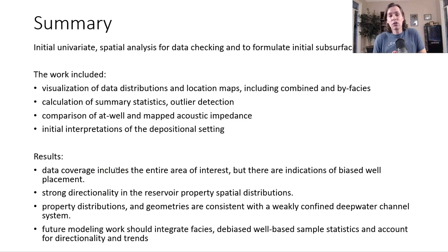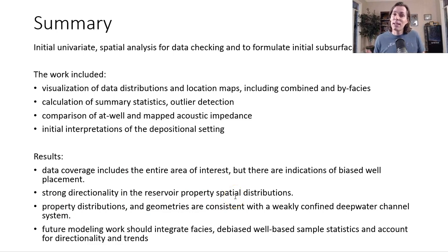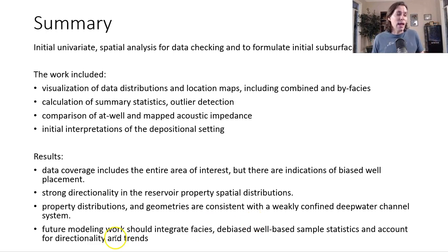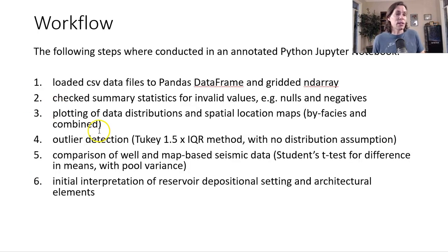What are the results for the rest of the team going forward? Data coverage looks really good — the entire area of interest has pretty good sampling. It's not regular, it's not random, but we do have good indication that there is some bias in the sampling; better reservoir locations or regions are sampled more densely. There is strong directionality in the property spatial distributions. Property distributions and geometries are consistent with a weakly confined deep water channel system — that's our initial hypothesis. Future modeling work should integrate facies debiasing and account for directionality and trends, as this is not homogeneous.